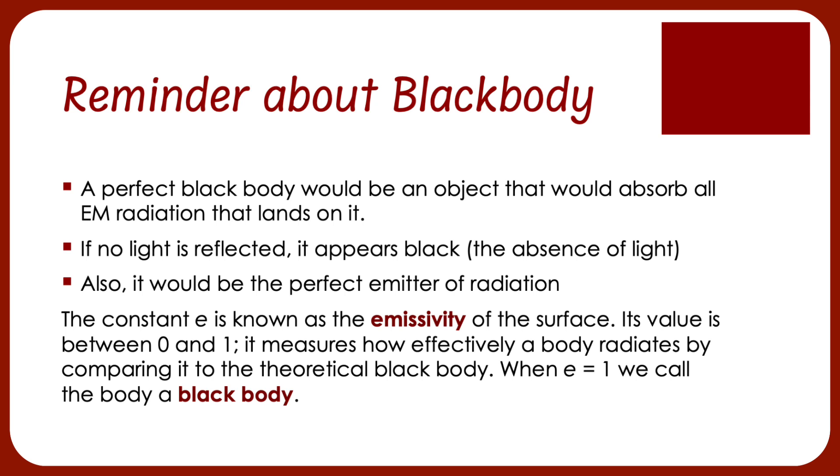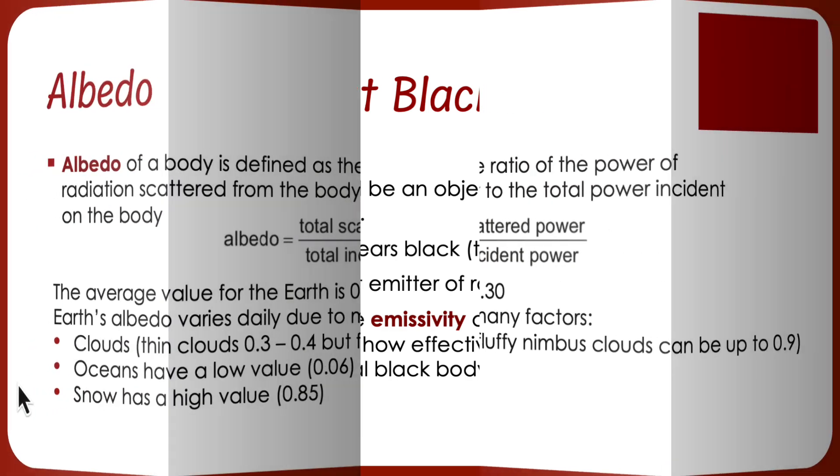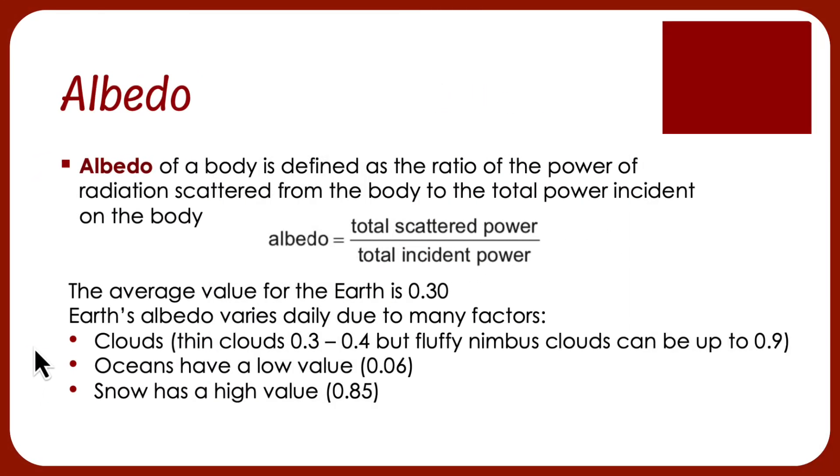If it was perfect as a black body, we're going to say its emissivity is 1. And if it reflected everything and didn't absorb anything, we would say it was 0. Now, albedo is not quite the opposite calculation, but it is an opposite idea.